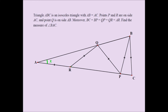Since triangle ARQ is an isosceles triangle, this angle has to be X as well. Now if this is X and this is X, this angle is going to be 180 minus 2X, so the exterior angle will turn out to be 2X. You probably want to do the math yourself — with a little bit of algebra, you'll find that this angle is 2X.